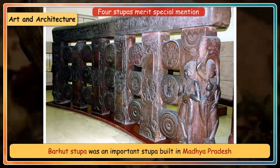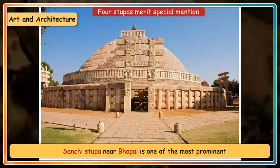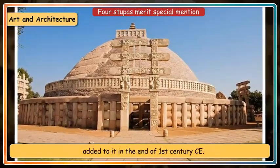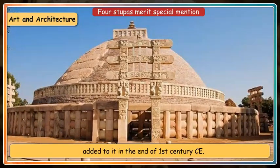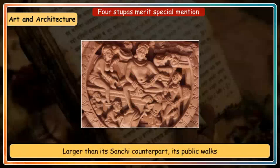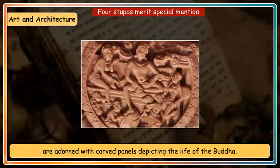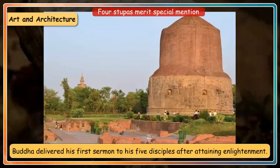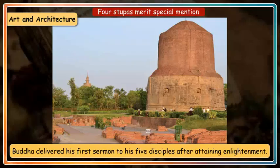Four stupas merit special mention. The Bharhut Stupa, built in Madhya Pradesh, was important for its sculpture, though it does not exist today. The Sanchi Stupa near Bhopal is one of the most prominent architectural remains of ancient India, with four Toranas (gateways) with carved designs added in the late 1st century CE. The Amaravati Stupa in the Krishna Valley was built in its completed form in 200 CE, its walls adorned with carved panels depicting the life of the Buddha. The Dhamek Stupa at Sarnath marks the spot in the deer park where the Buddha delivered his first sermon to his five disciples after attaining enlightenment.